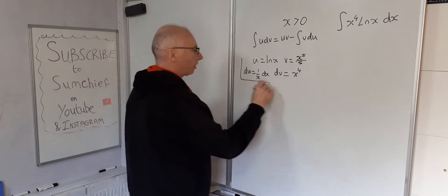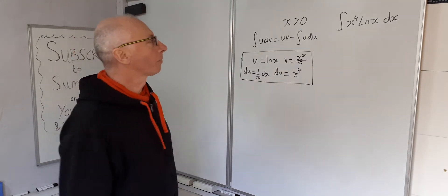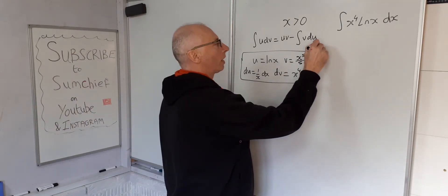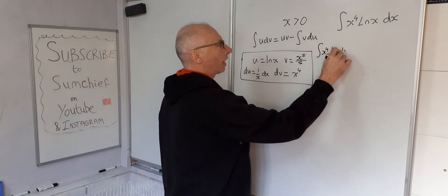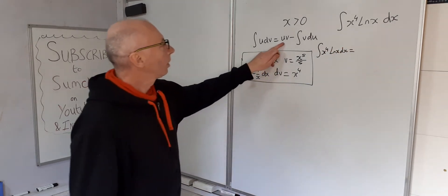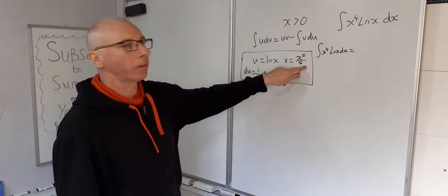Okay, so that takes care of all our components for this formula. So now we're going to write x to the 4 ln of x dx equals uv natural log of x times x to the 5 over 5.